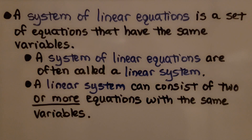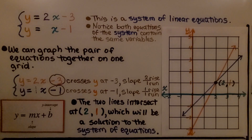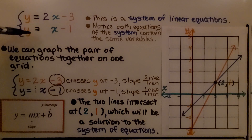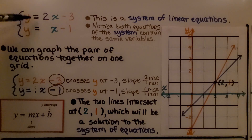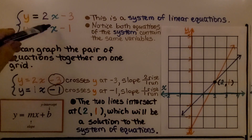A system of linear equations is a set of equations that have the same variables. A system of linear equations is often called a linear system, and a linear system can consist of two or more equations with the same variables. Notice both equations of the system contain the same variables — they both have a y and an x.